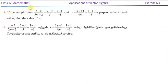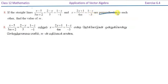Unit 6, exercise 6.4, question number 8. If the straight lines (x minus 5) divided by (5m plus 2) equals (2 minus y) divided by 5 equals (1 minus z) divided by minus 1, and x equals (2y plus 1) divided by 4m equals (1 minus z) divided by minus 3, are perpendicular to each other, find the value of m.